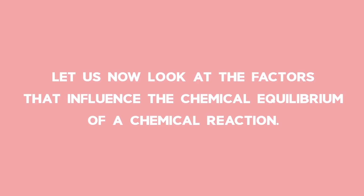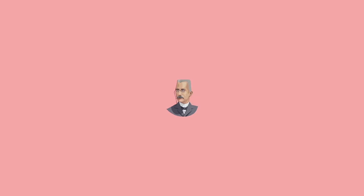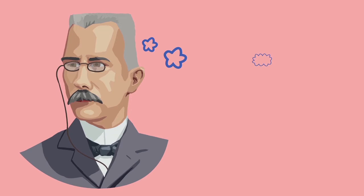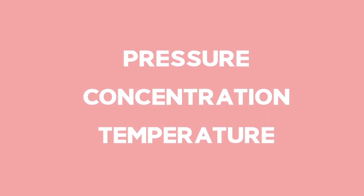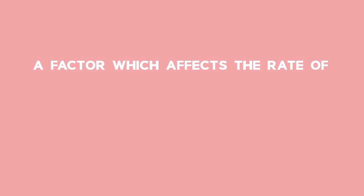Let's look at the factors that influence the chemical equilibrium of a chemical reaction. A scientist by the name of Le Chatelier studied these factors. We'll look at three factors that influence equilibrium: pressure, concentration, and temperature. They also affect the rates of chemical reactions. A factor which affects the rate of the forward reaction differently to the reverse reaction will affect the position of the equilibrium.